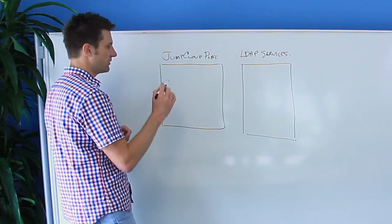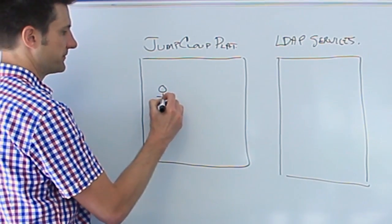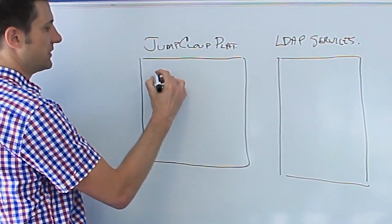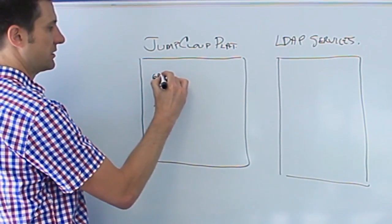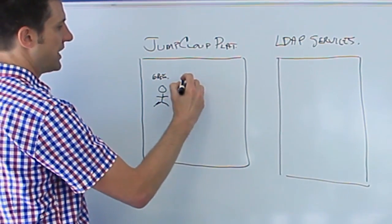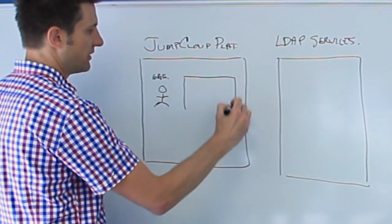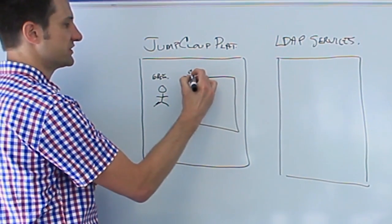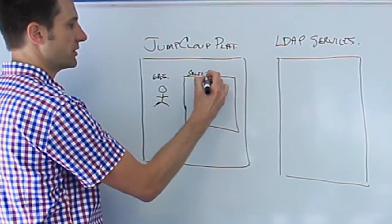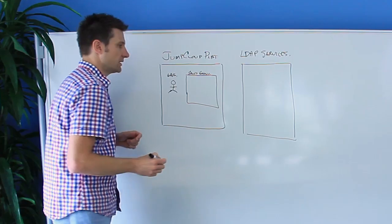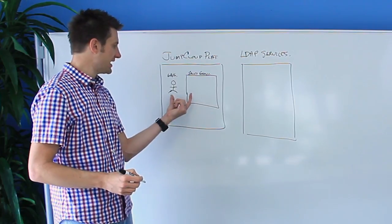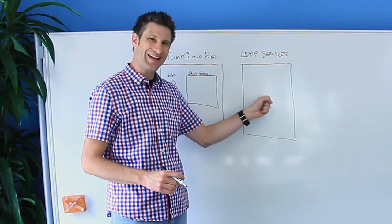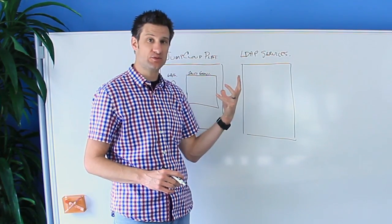Let's assume, number one, that you have a user account. Number two, so we'll call this guy Greg. Number two, you have a group of users. So, we'll call this, just for the sake of argument, we'll call this the sales group. But notice here, we have these objects created. They are active, the group and the user. But nothing yet exists in LDAP or in our LDAP services. Why is that?